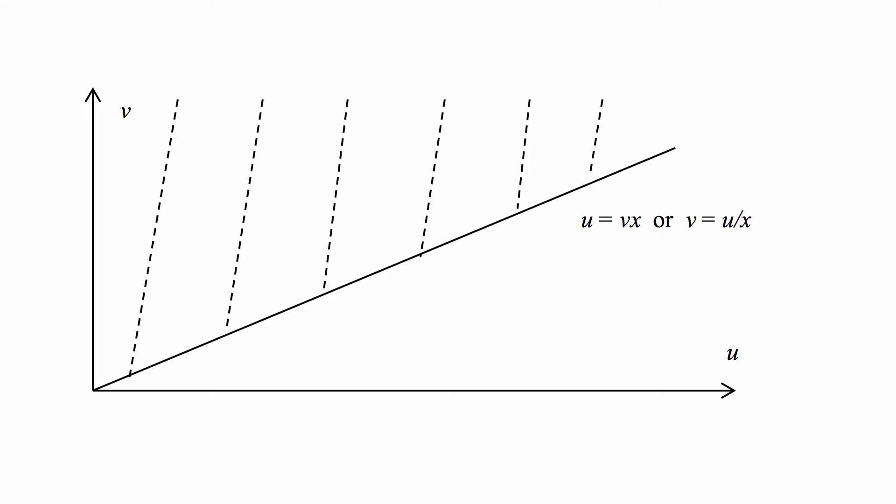Above that line, v is more than u/x, because along the line v equals u/x, and higher values of v are higher in this graph. Higher values of u are to the right. We're interested in the area where v is more than u/x.